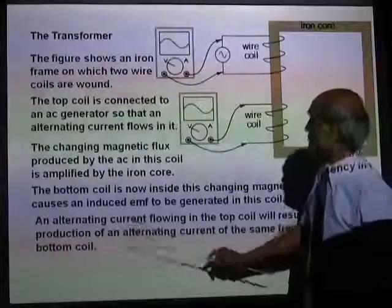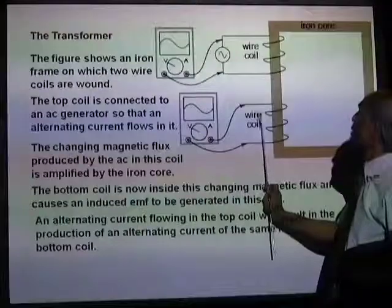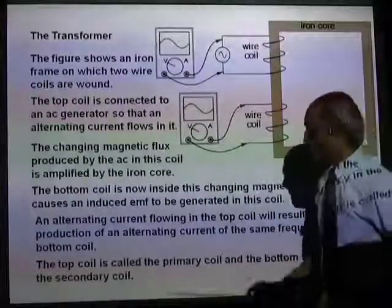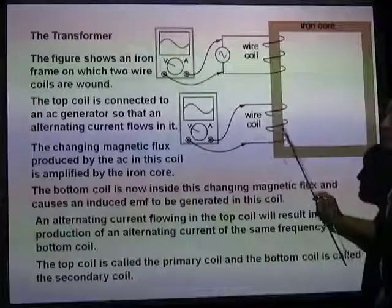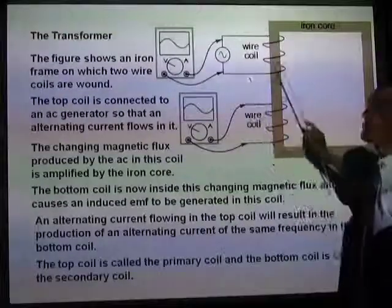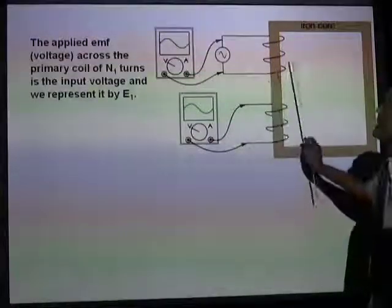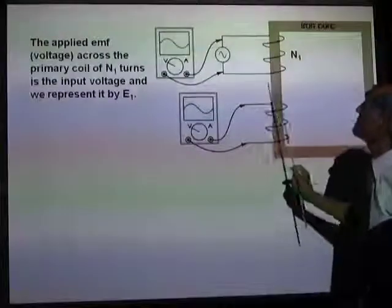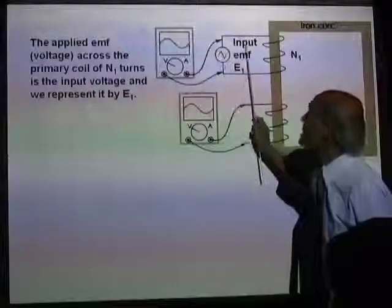The alternating current flowing in the first coil induces a current in the second coil. The first coil is called the primary coil and the second one is called the secondary coil. N1 is the number of turns in the primary and E1 is the input voltage.